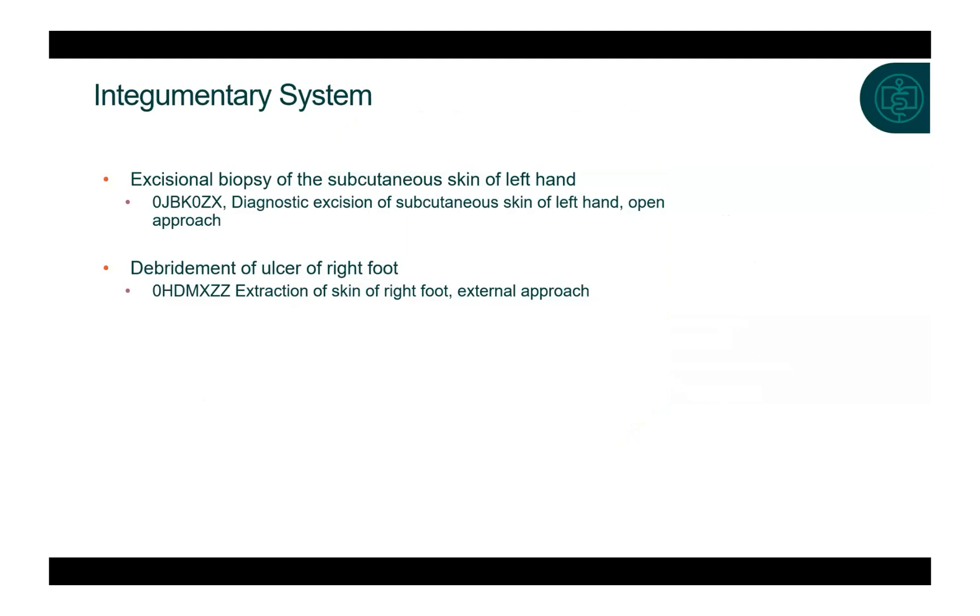In ICD-10-PCS, there are two root operations which may be used to report a debridement, an excision, the cutting out or off without replacement of a portion of a body part, or extraction, pulling or stripping out or off all of a portion of a body part by the use of force. In order to properly code debridements in using ICD-10-PCS, the documentation must indicate if it's excisional or non-excisional, the depth, and the location of the area being treated.